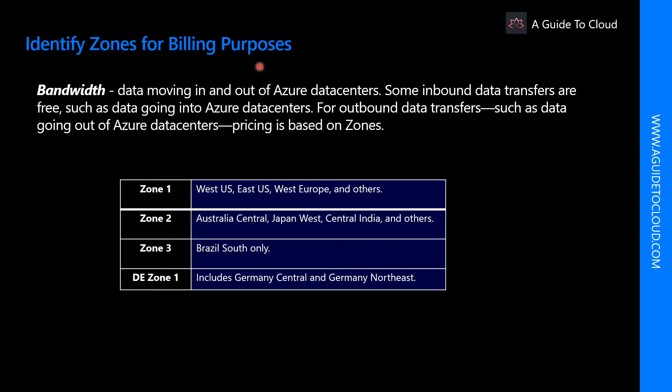Now let's understand billing zones. Bandwidth refers to data moving in and out of Azure data centers. Some inbound data transfers, such as data going into an Azure data center, are free. For outbound data transfers, such as data going out of Azure data centers, the transfer price is based on zones. A zone is a geographical grouping of Azure regions for billing purposes.